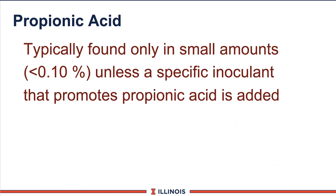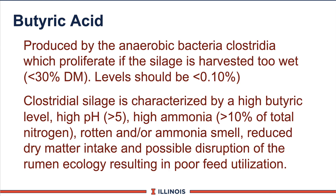Propionic acid is not very common — you can see it's in very small proportions, less than one-tenth of one percent. So unless you're adding a specific inoculant to produce it, it will not be there. Butyric acid, especially with alfalfa, legume, and grass silages, is a clostridial fermentation — this is bad news. You want to see this below 0.5 percent, and ideally it should be under 0.1 percent butyric acid if you have the right dry matter, the right stage of maturity, and a good inoculant. This can be very dangerous based on Wisconsin research.